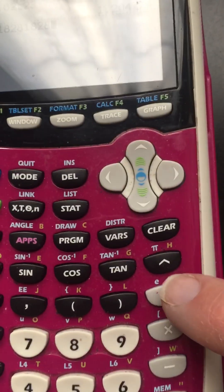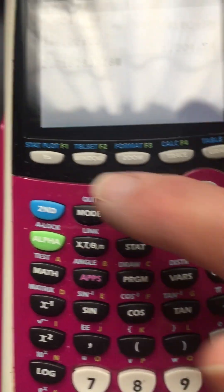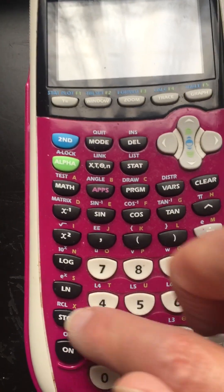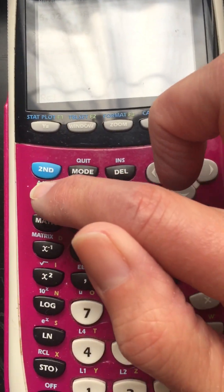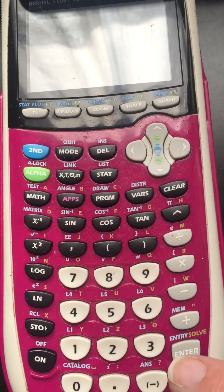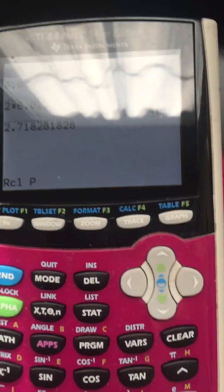So I think like maybe pi is under P. Let's go see if it is. So I'm gonna do second recall, and where I'm looking is alpha, and I want it to be P right there. And let's see if it is.